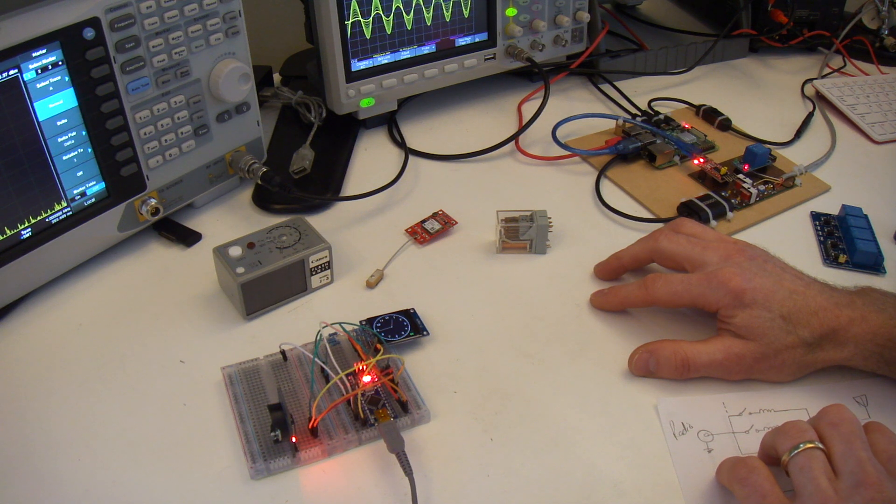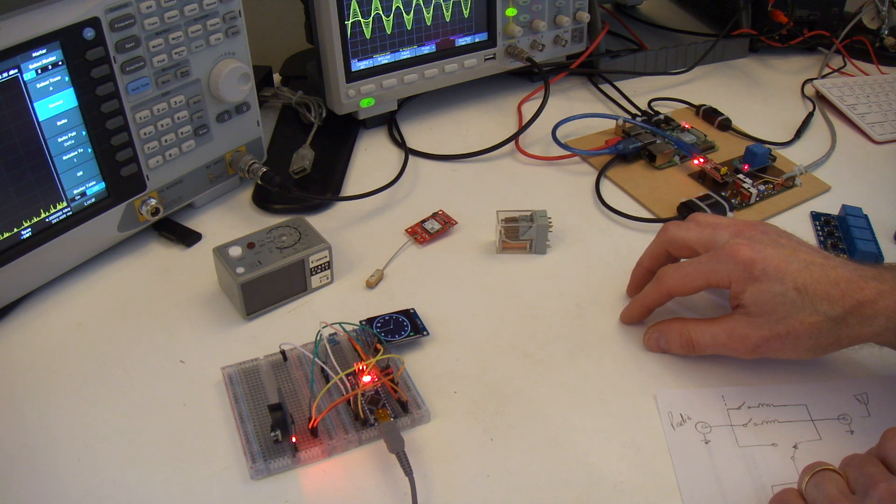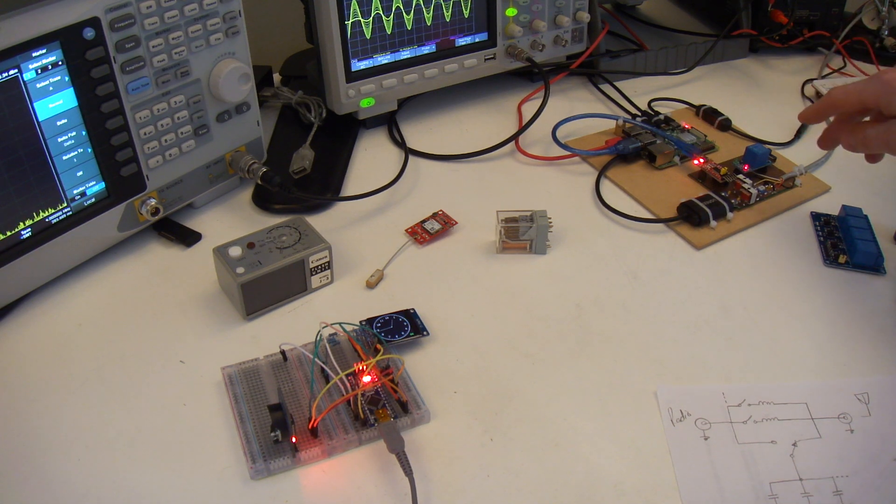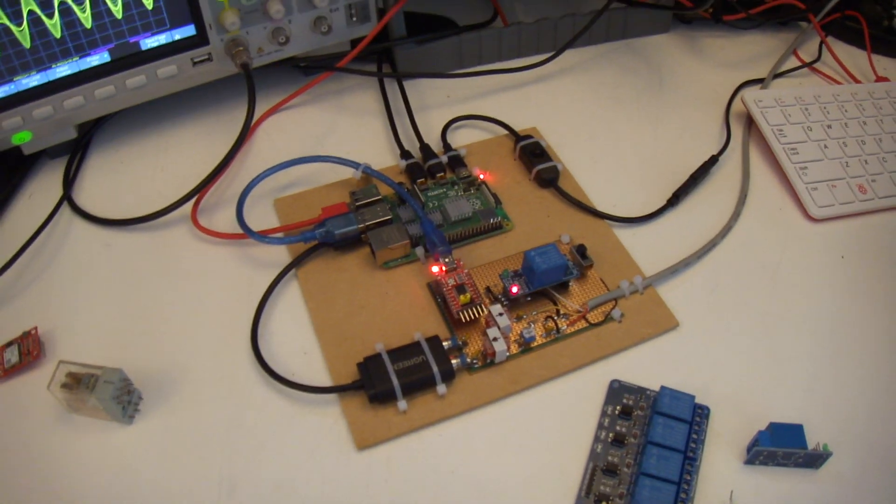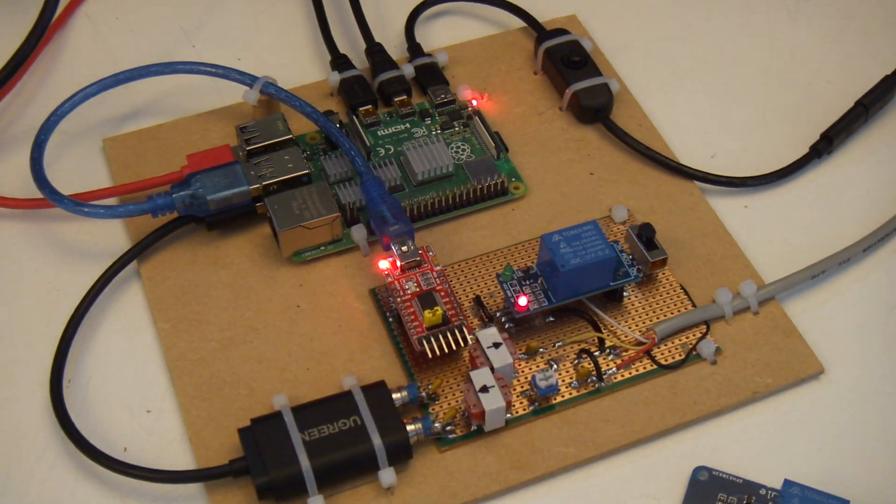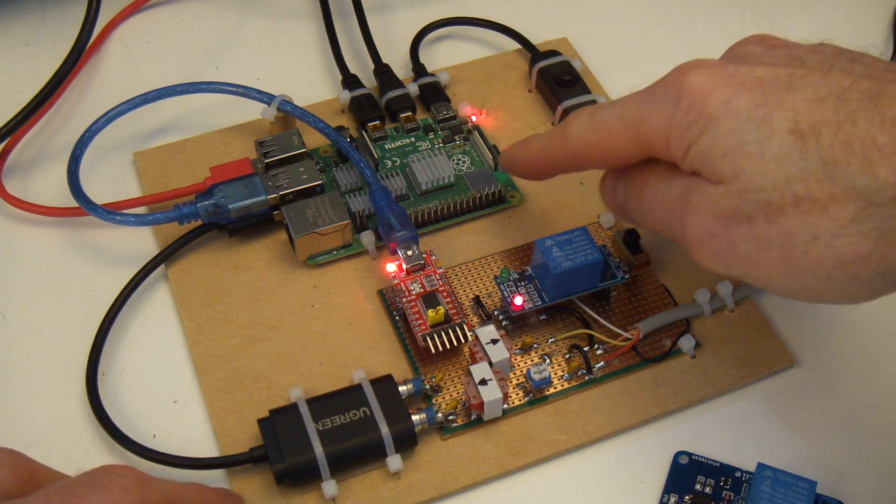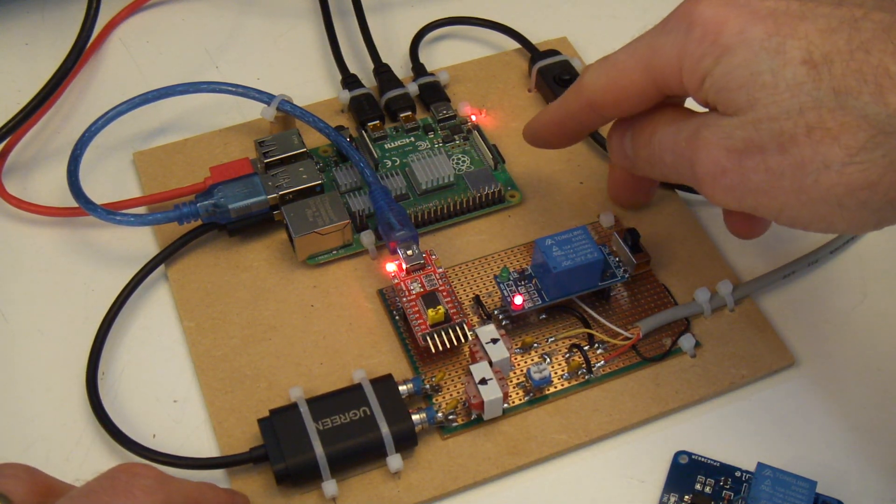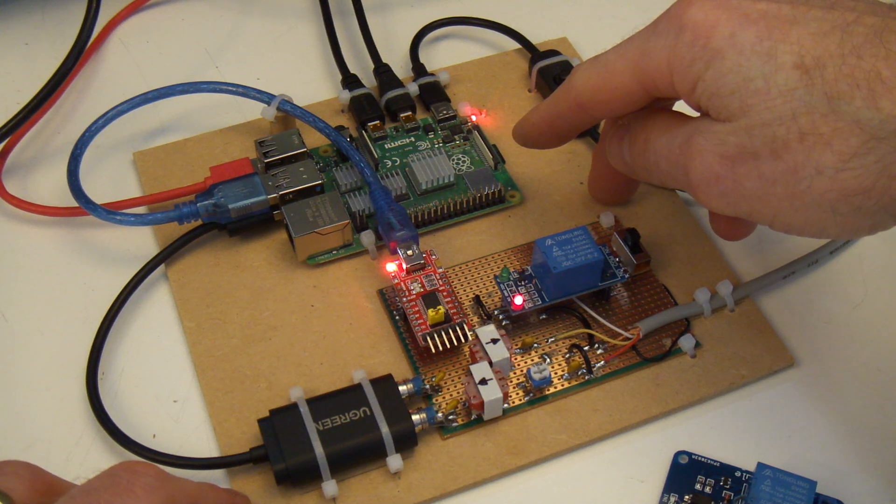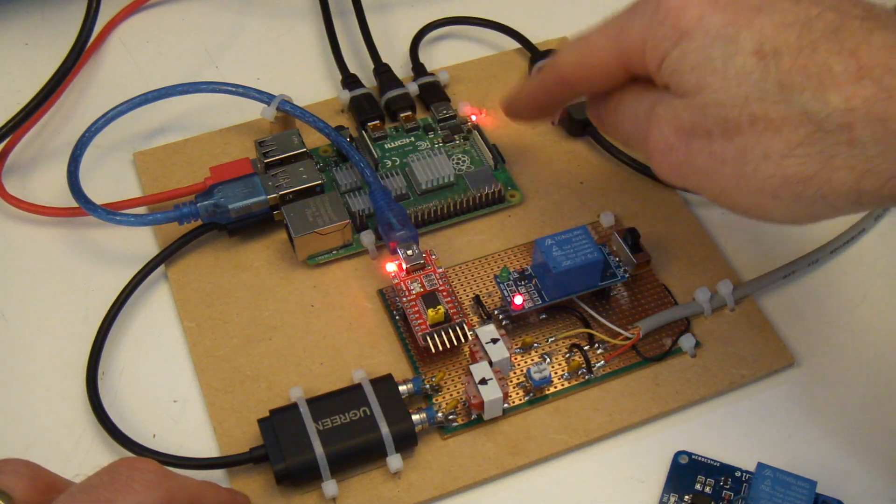In the meantime what I have been playing around with is firstly the digital modes. Down here is a little breakout board for the Raspberry Pi to keep the cabling nice and tidy because it can turn into a bit of a rat's nest. So Raspberry Pi 4 there, running the likes of FL Digi, WSJT, JS8Call and the like.